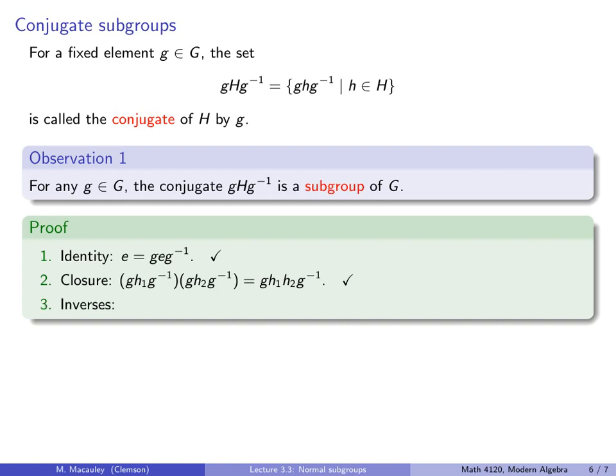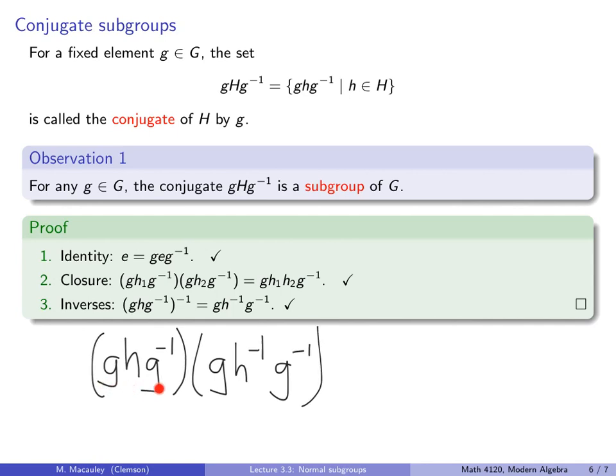Now finally, so what do you think the inverse of this element is, g h g inverse? Well how about g, h inverse, g inverse? So I claim that's true. In other words, the inverse of this is that, and let's just check this. So g, h, g inverse, let's check that if we multiply that by g, h inverse, g inverse, so again I'm multiplying this element by its claimed inverse, this thing. Notice what happens. So the g inverse and the g cancels, the h and the h inverse then cancels, and finally this g cancels with that g inverse, and we are indeed left with the identity.